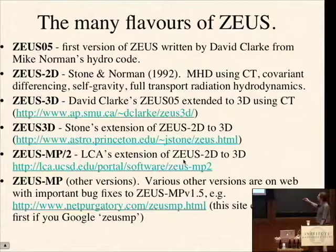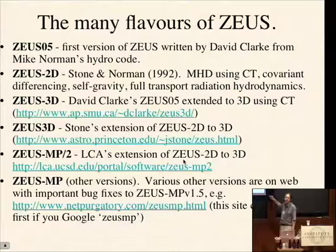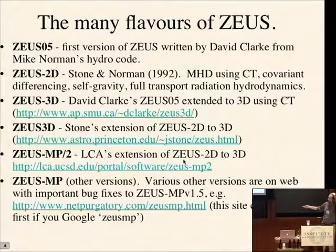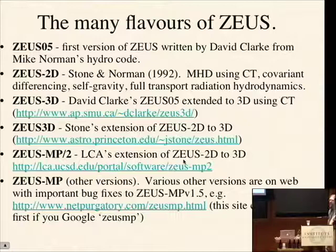Interestingly, if you Google Zeus-MP, the version you find is being developed at the University of Maryland, where students have fixed bugs and put their updated version on the web for anyone to use. By now there are many different flavors of Zeus, but it's just one implementation of these operator-split algorithms. They're all written in Fortran.